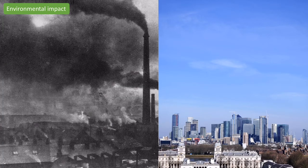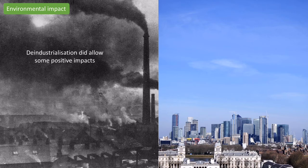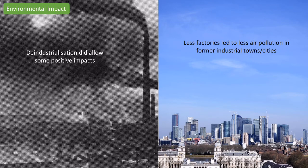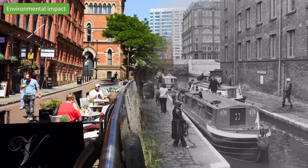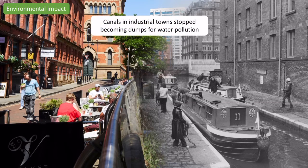Now I'm going to look at some of the positive effects that have come from this shift away from industry and towards the tertiary sector. We can see that in Sheffield the sky was full of smog, and one of the most obvious positive factors is that air pollution in these former industrial towns and cities has gone down because there are no longer factories spewing out pollution. Similarly, places like Birmingham and other cities with canals used to have industrial waste dumped into them, but rivers and canals are now a lot cleaner.